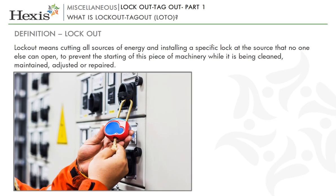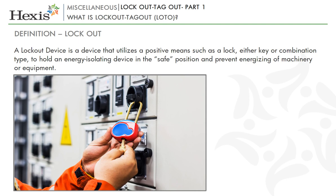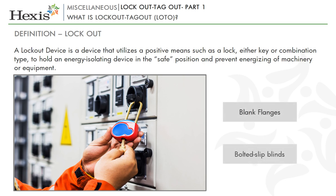Lockout means cutting all sources of energy and installing a specific lock at the source that no one else can open, to prevent the starting of this piece of machinery while it is being cleaned, maintained, adjusted or repaired. It is the use of a special locking system to prevent power from being accidentally turned on during repair or maintenance works. A lockout device utilizes a positive means such as a lock, either key or combination type, to hold an energy-isolating device in the safe position and prevent energizing of machinery or equipment. Included in this category are blank flanges and bolted slip blinds.